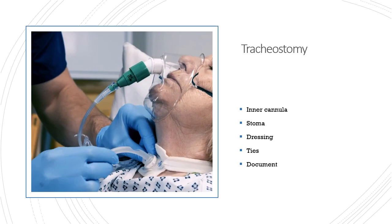A tracheostomy is an artificial airway created in the trachea to allow for long-term mechanical ventilation or to decrease the work of breathing in certain patients with chronic disease. It can also be used in patients following laryngectomy for laryngeal cancer. There are some basic steps to providing care for the patient who has a tracheostomy — in order: take care of the inner cannula, the stoma, the dressing, the ties, and then document it.